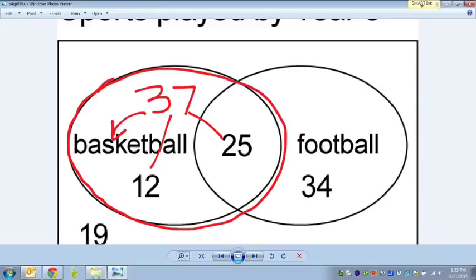So there are a total of 37 people who like basketball, and 37 is 12 plus 25.